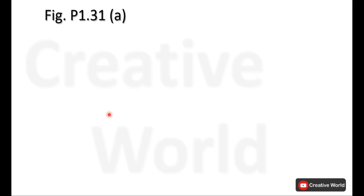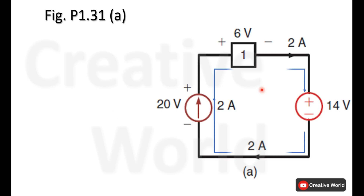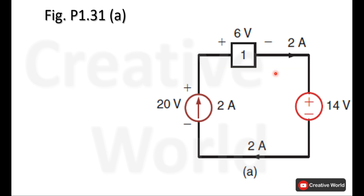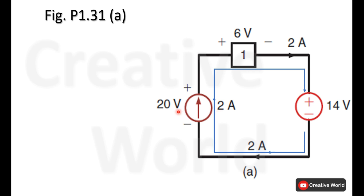Figure 1.31A. The voltage across each element is mentioned, and the direction of current is shown with blue arrows. In order to calculate power, we have both parameters — current as well as voltage — across each element, so we can easily calculate the power of each element.